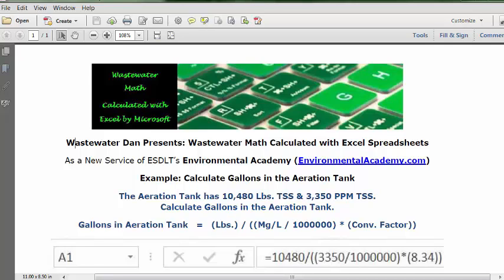Today's example: calculate gallons in the aeration tank. The problem reads: the aeration tank has 10,480 pounds TSS and 3,350 ppm TSS. Calculate gallons in the aeration tank.